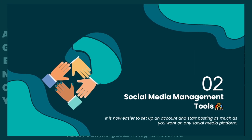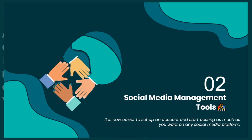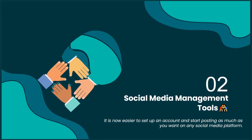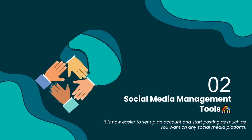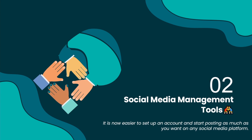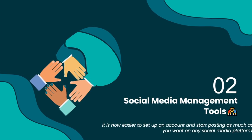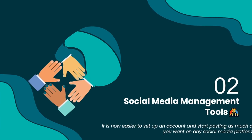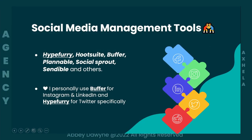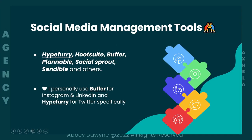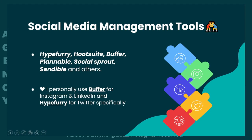The second tool is social media management. It's easy to set up an account and start posting on platforms like Twitter, Instagram, LinkedIn, YouTube, Facebook, Vero, or Pinterest. However, managing social media accounts can be really time-consuming and hectic when you're focused on company growth. That's why it's best to utilize third-party social media management tools like Hypefury, Hootsuite, Buffer, Planable, Sprout Social, and others.